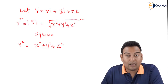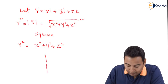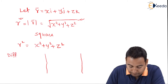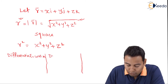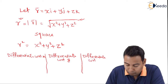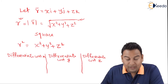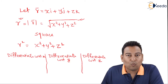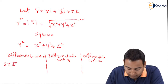Now I'm going to differentiate r² = x² + y² + z² with respect to x, then with respect to y, and then with respect to z. Differentiating with respect to x: on the left side, by the chain rule, the derivative of r² with respect to x is 2r·(∂r/∂x).